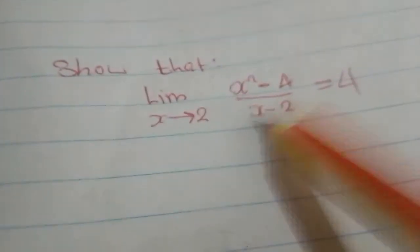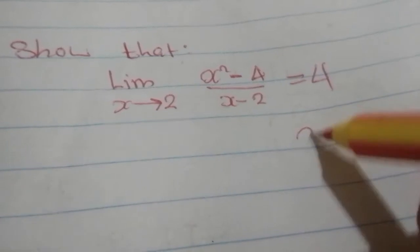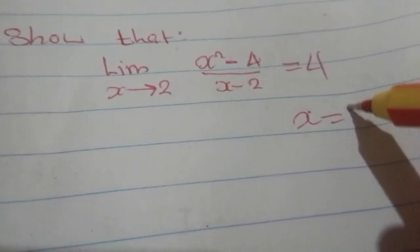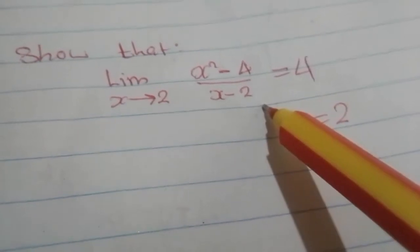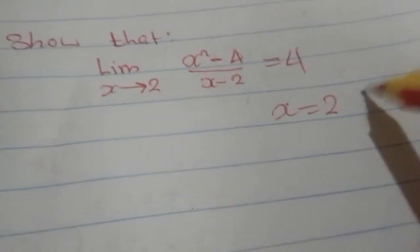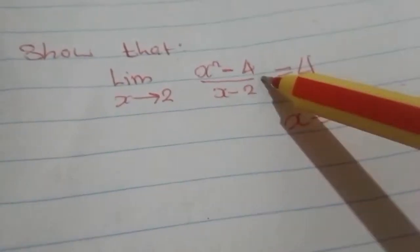Show that this limit is equal to 4. So when we see x equal to 2, it will be 2 minus 2, which is equal to 0. So any number you divide by 0 and get infinity, so this one will be not defined.